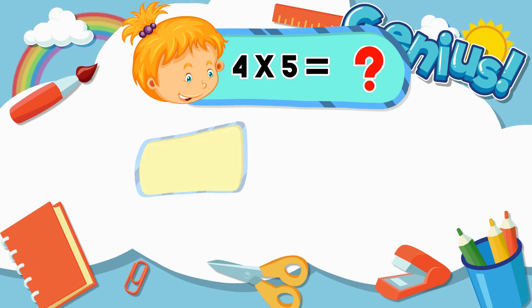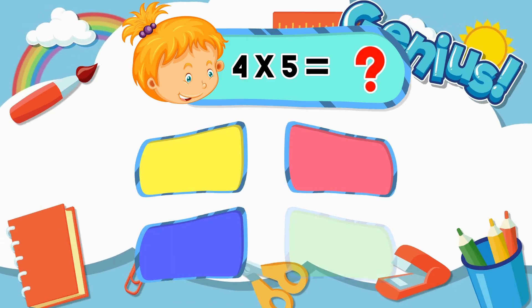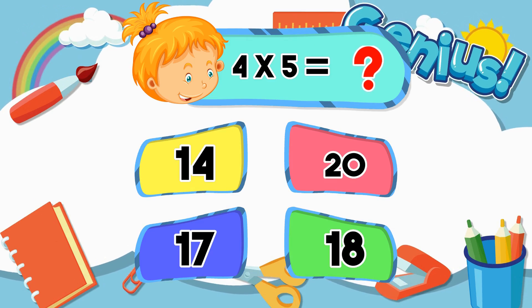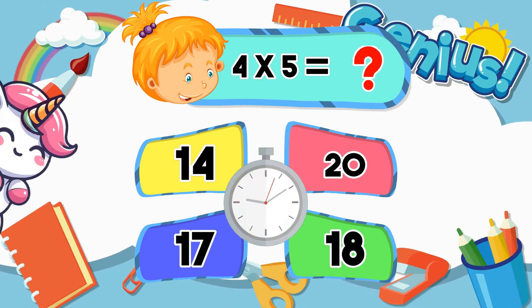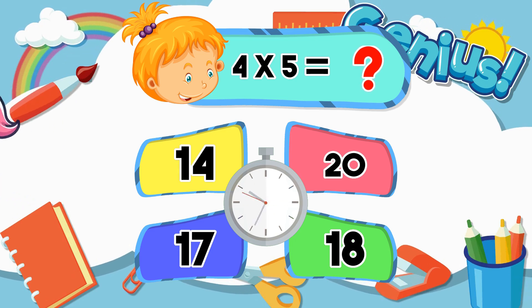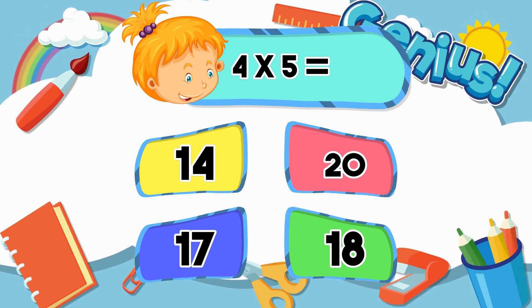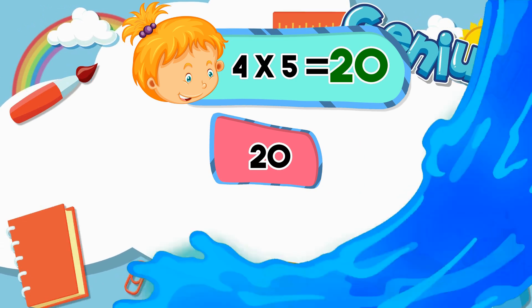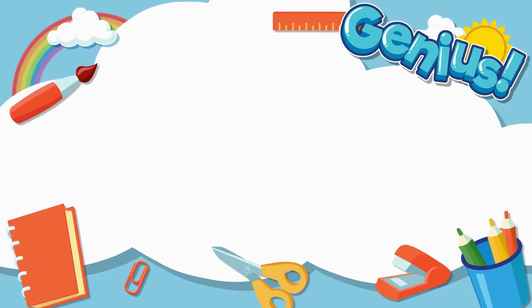What is 4 times 5? 14, 20, 17, 18. Answer: 20.